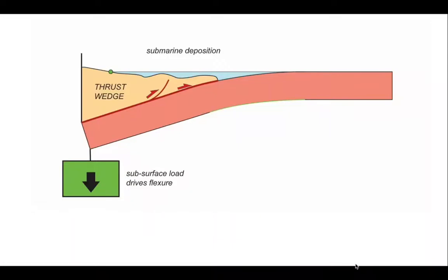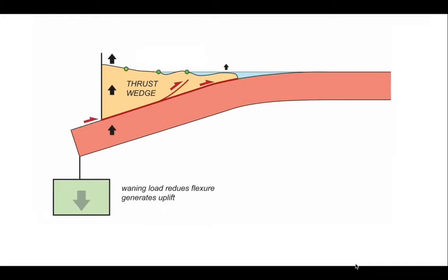Let's now return to this simple cartoon showing a load of thrust wedge and a subsurface load flexing the pink plate. What happens if we reduce the load? This could happen by detaching a continuation of an oceanic slab, so called slab break off. Or it could happen by normal faulting off the back of the thrust wedge or just simple erosion of the thrust wedge. What's going to happen is we'll take mass off our springboard. So the springboard will go up. A waning load reduces the flexure and generates uplift. So consequently, we'll generate regression if it's an underfilled basin out across our thrust wedge.